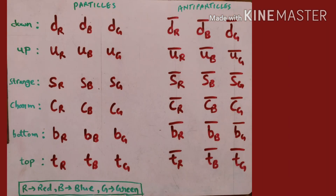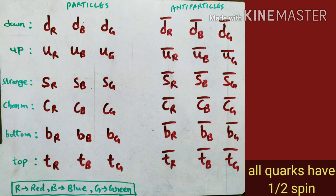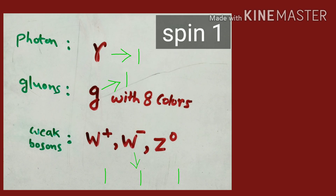All 36 quarks have spin-1/2. Out of 36, 18 are particles and 18 are antiparticles — all have spin-1/2. Now for mediators: all 12 mediators have spin-1, and the Higgs boson has spin-0.